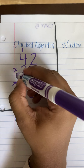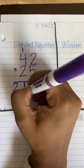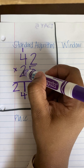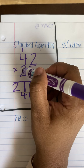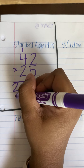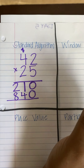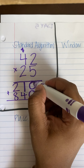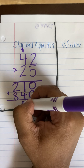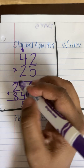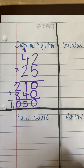Four is 20, plus my one is 21. I'm going to come to the next line and say two times two is four, and then two times four is eight. I'm going to add these two together. Zero plus zero is zero, four plus one is five, and eight plus two is 10. Therefore, my product is 1050.